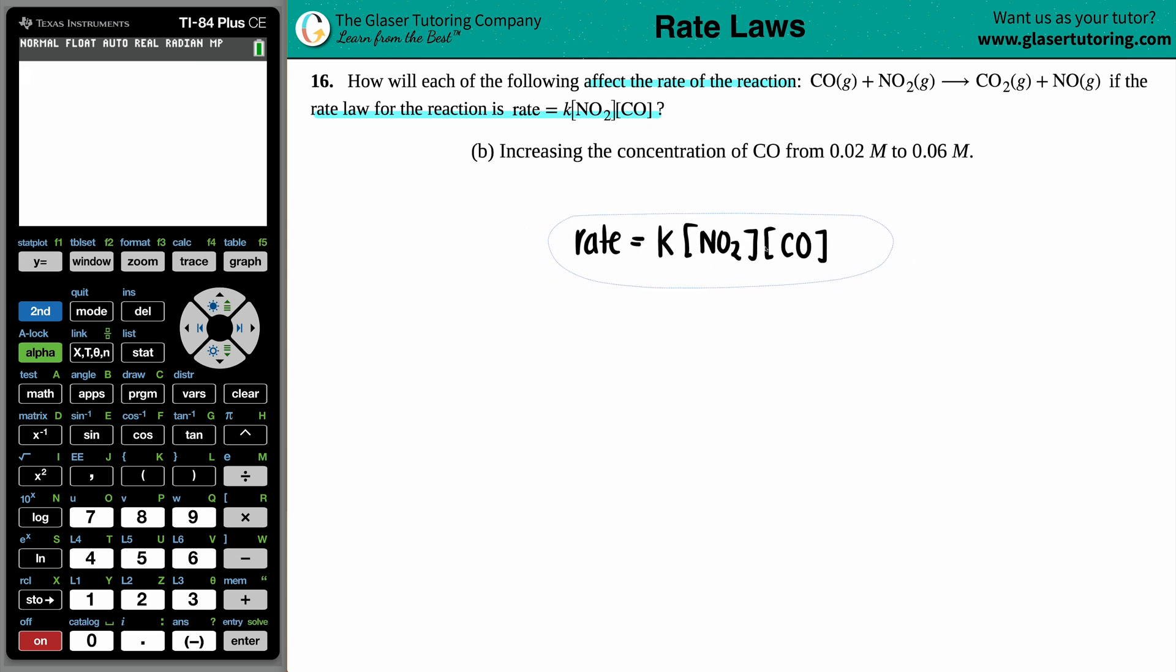So once they give you a rate law, this will be way more important than any balanced equation, especially when we're dealing with rates and kinetics for chemistry. If they give you a rate law, we have to go based off of what is given. Sometimes the rate law can match up with the balanced equation, but sometimes it doesn't have to, and that's okay. Sometimes they will do that to you just to make sure that you know how to use your rate laws.